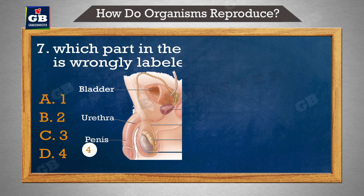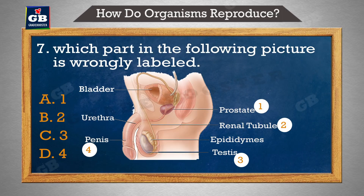Which part in the following picture is wrongly labeled? — nimn chitra mein kaun sa part galat label kiya gaya hai. A. One, B. Two, C. Three, D. Four.